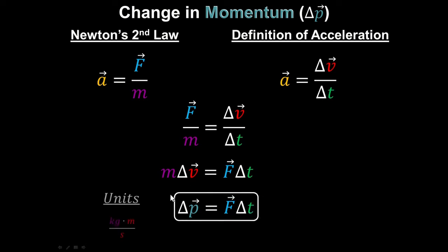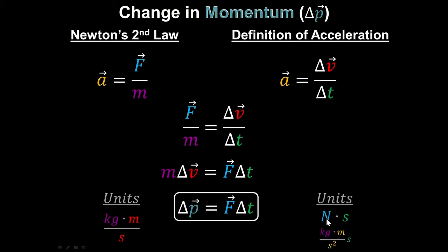Let's check the units. Change in momentum has units of kilogram meters per second. The other side has newtons times seconds. Breaking down newtons into mass times acceleration — the squared and seconds cancel — and we do get kilogram meters per second. So force times time really can calculate the change in momentum. That action of taking a force and multiplying it by a time is so important we give it a word: impulse.